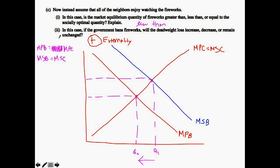Now for the second part of part C: if the government bans fireworks, will deadweight loss increase, decrease, or remain unchanged? Because the positive externality is not being acknowledged on the private side, there's already a deadweight loss from under-production. If the government bans fireworks entirely, that deadweight loss becomes even more apparent — output drops to zero, which is even further from the social optimum. Therefore, deadweight loss would increase if fireworks are banned.